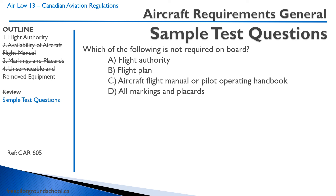Let's talk about some sample test questions. Which of the following is not required on board? A: flight authority. B: flight plan. C: aircraft flight manual or pilot operating handbook. D: all markings and placards. We just talked about needing a flight authority, a flight manual, and markings and placards. So what's remaining? B — the flight plan. That concludes our lesson on aircraft requirements. Thanks for joining us, and we'll see you on our next lesson.